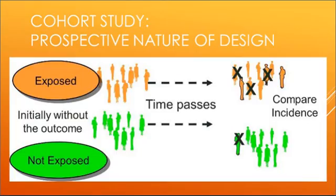Here's a little picture of what that looks like. So we look at, in the beginning, whether they're exposed or not. In the beginning, we also have to make sure that they don't have the outcome of interest to begin with. For example, if we're looking at whether people are exposed to a certain type of diet — let's say Mediterranean diet — and we want to follow them forward to see if they get a certain type of cancer, let's say stomach cancer, we want to make sure that in the beginning they don't already have the stomach cancer. We first have to assess them for the outcome to make sure they don't have it, and then we assess them for the exposure. We follow them forward in time and compare whether or not they have cancer at certain time points along the timeline.